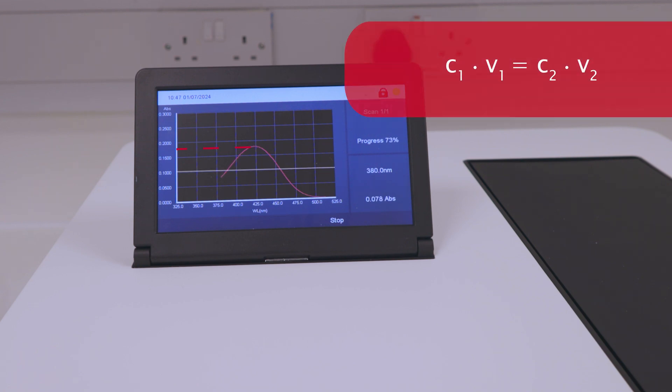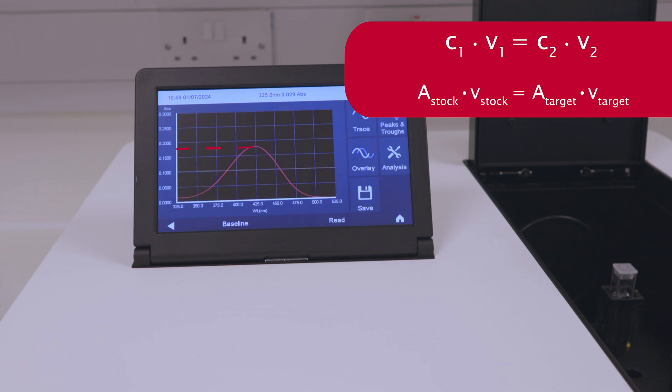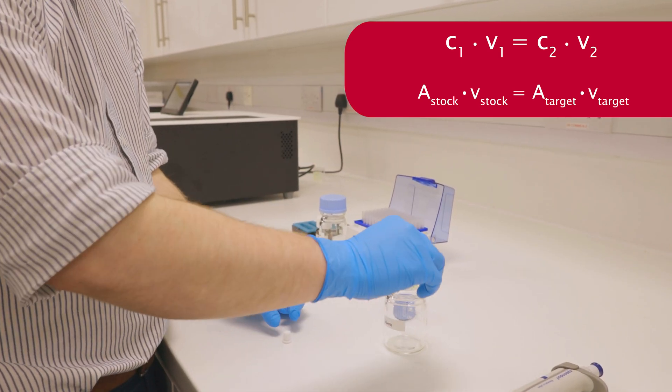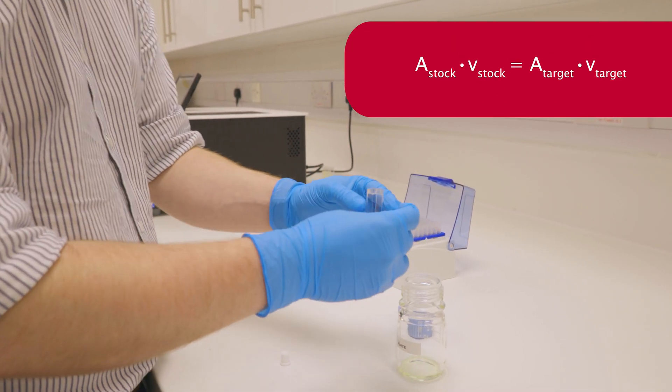To determine an appropriate dilution factor, we can use the simple C1V1 equals C2V2 equation. In this instance, C1 and V1 are the absorbance and volume of our stock solution. C2 and V2 are therefore the absorbance and volume of our target solution.